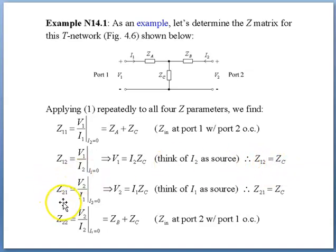Z21 is when you are considering V2 over I1, where I1 is your source and I2 equals 0. That will give you V2 equals I1·ZC. Finally, you will get Z21 equals ZC.